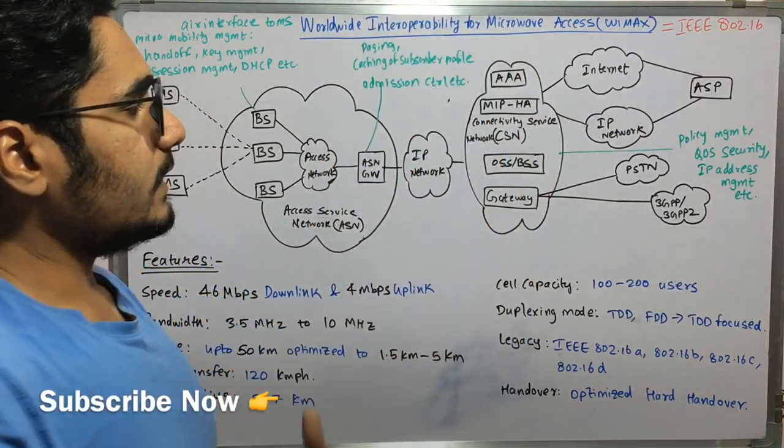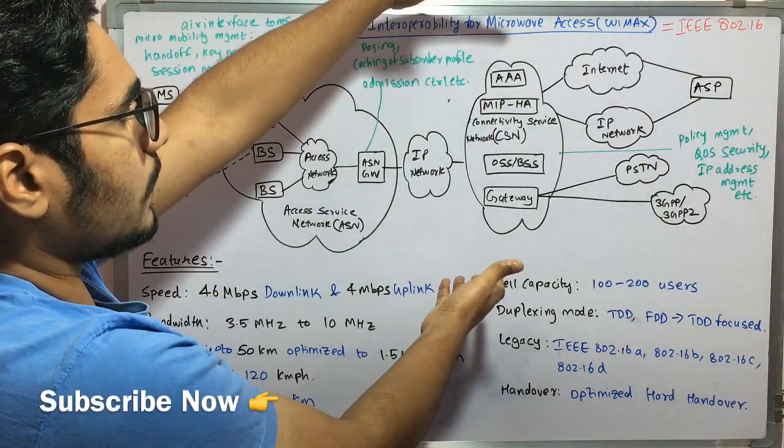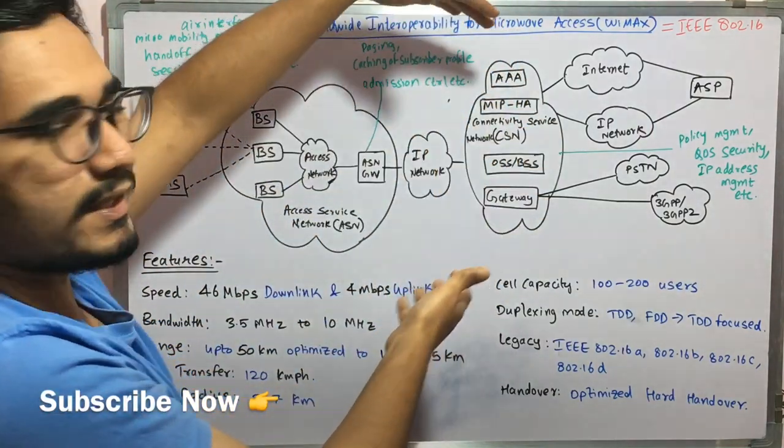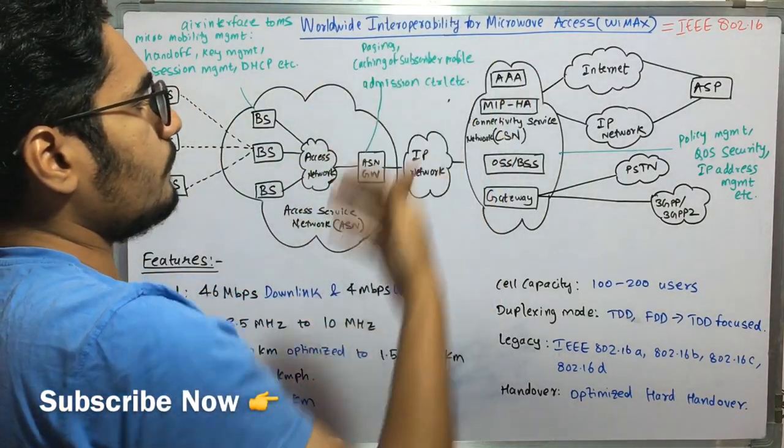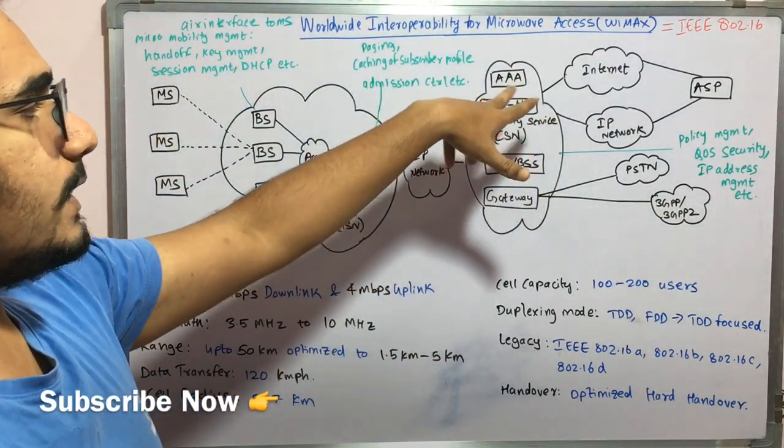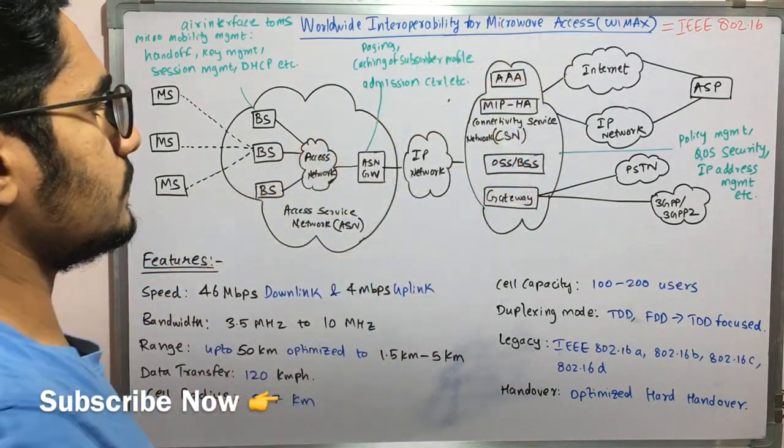Then you have this connectivity service network which actually connects all this particular various technologies. So we have this AAA that is authentication, authorization, and auditing of the resources which we have in the cloud resources. So this you can just assume as a cloud resource connectivity.